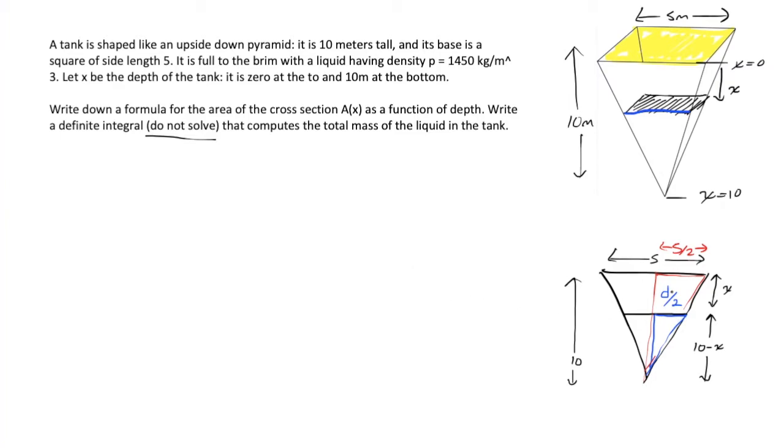It should be true that the sides are in proportion. d over 2, as related to 5 over 2, should be equal to 10 minus x over 10. If I take a moment to simplify that and try to get the side length d by itself, we have d over 5. Cross multiply the 5. I'm going to have d equals 10 minus x over 2. Or d equals 5 minus 1 half x.